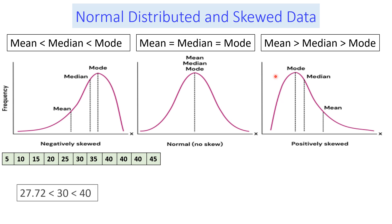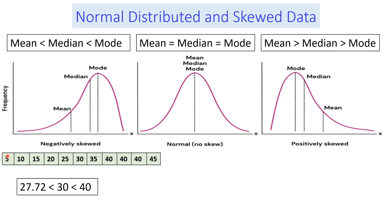We can also use these examples. Here is the data, and we can calculate the mean, and also find the mode and the median. Counting the data points: 1, 2, 3, 4, 5, 6, 7, 8, 9, 10, 11 — so the median is found in the middle, which is the 6th value. The mean is calculated by adding all values and dividing by the count. The mode is the most frequent data, which is 40. From this, the mean is less than the median, and the median is less than the mode.